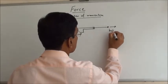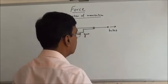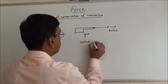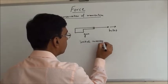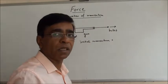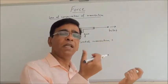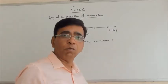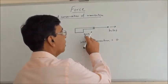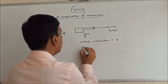Consider a bullet fired from a gun. What is the initial momentum? When the bullet is inside the gun, both the bullet and the gun are at rest, so speed is zero. The momentum of the gun plus the momentum of the bullet is zero.